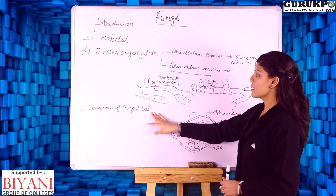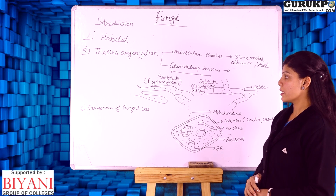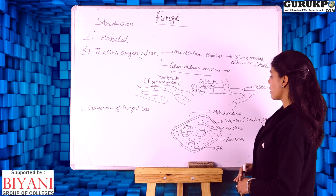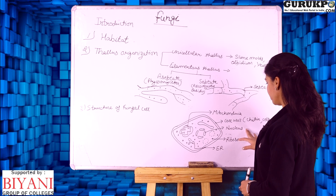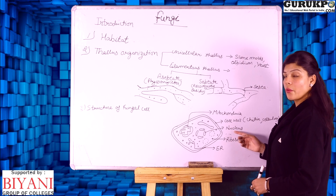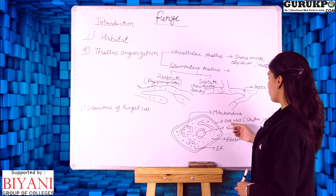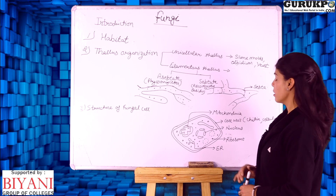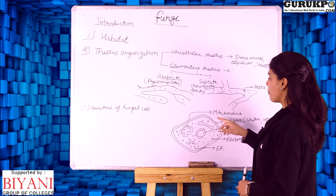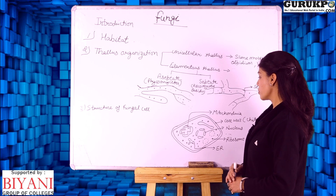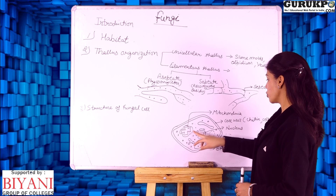The third category is the structure of the fungal cell. Fungi are eukaryotic organisms, so all cell organelles are present, including mitochondria, nucleus, ribosomes, endoplasmic reticulum, and the cell wall. The cell wall in fungi is made up of chitin and cellulose. Mitochondria are large in size and polymorphic in structure, and they help in respiration.